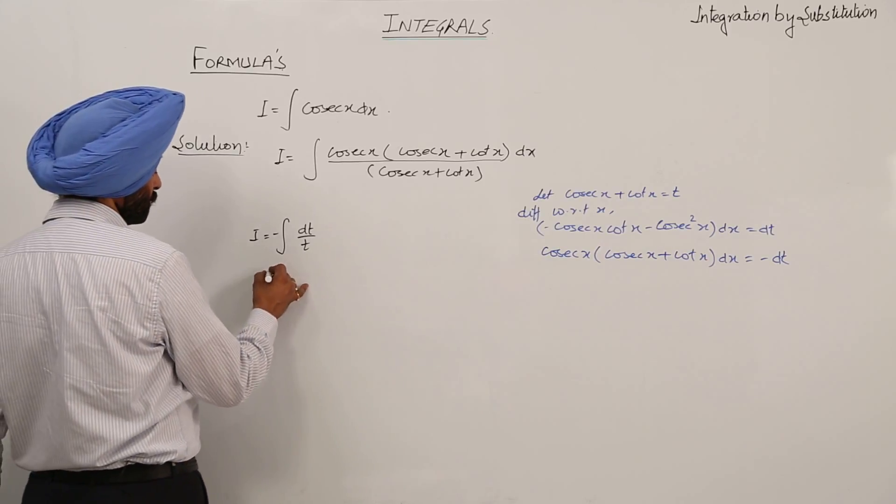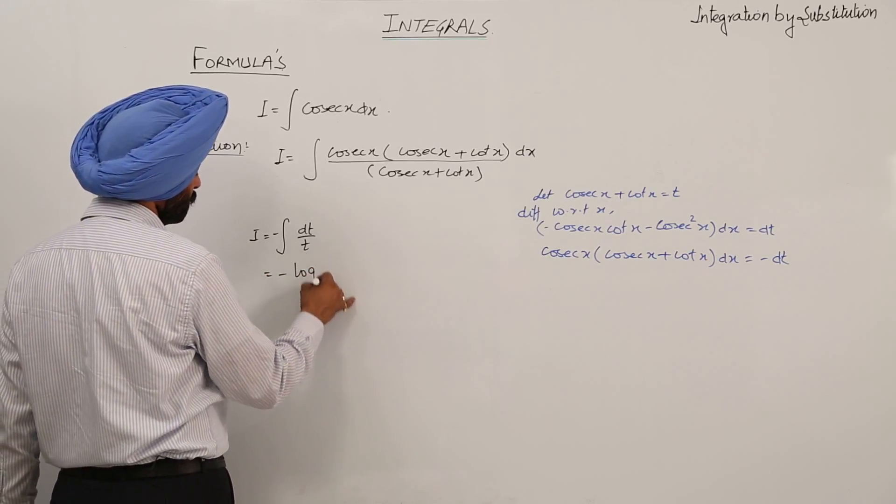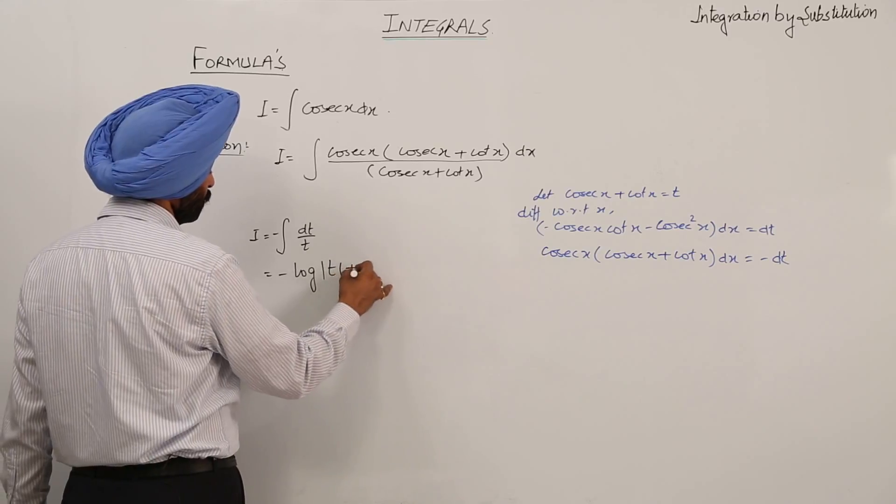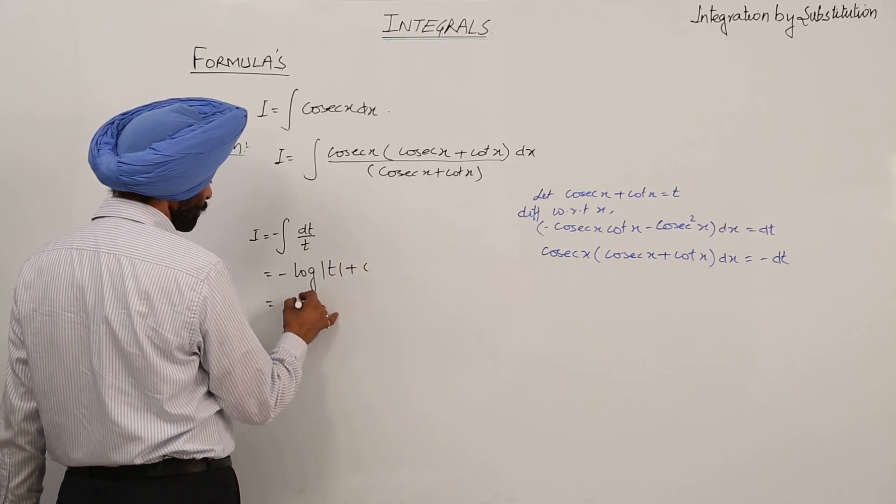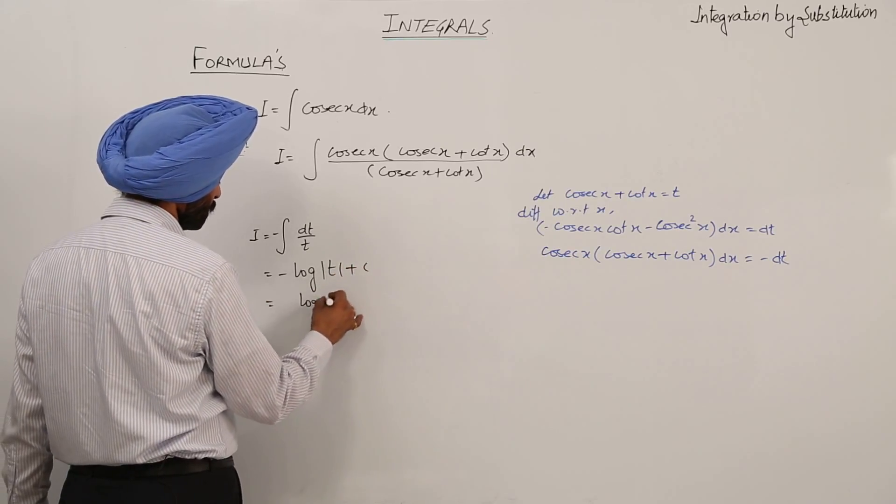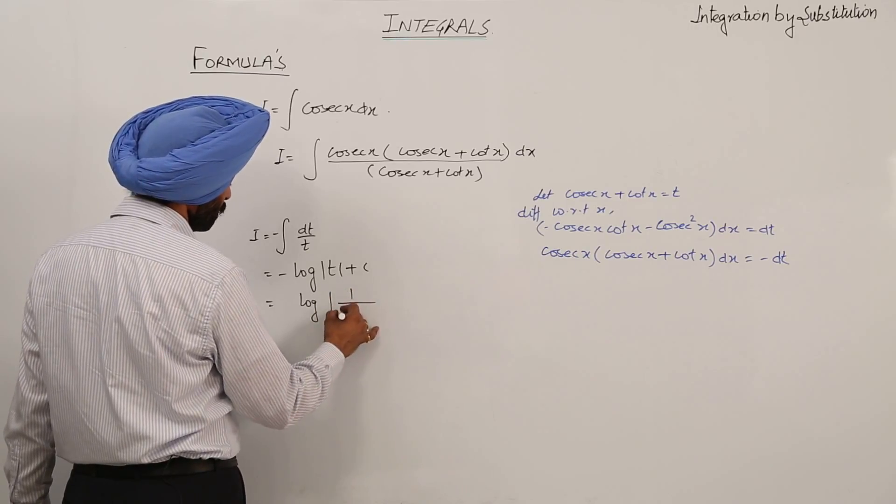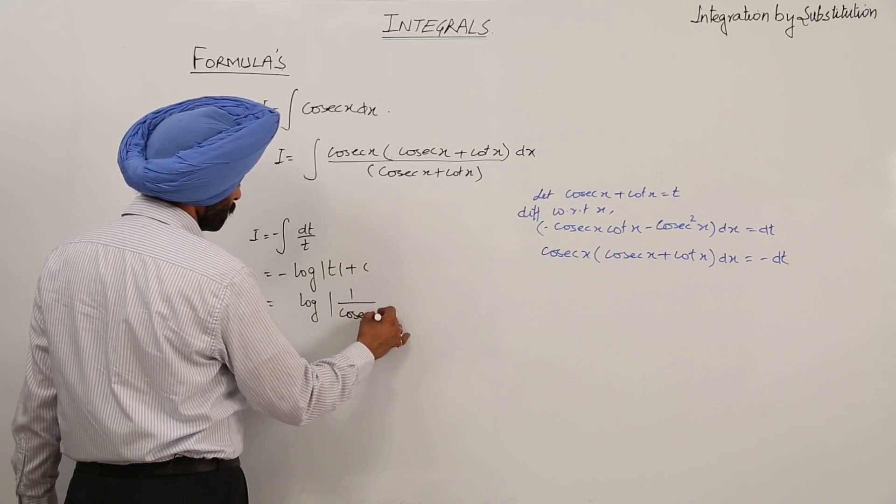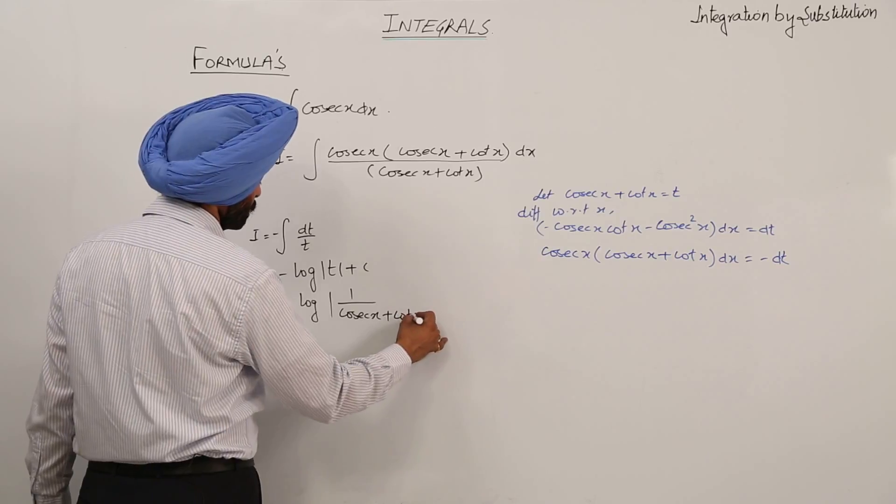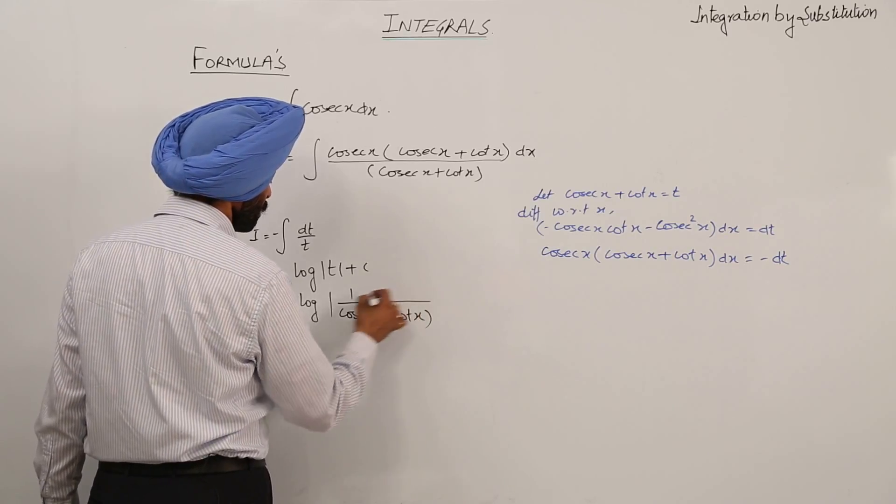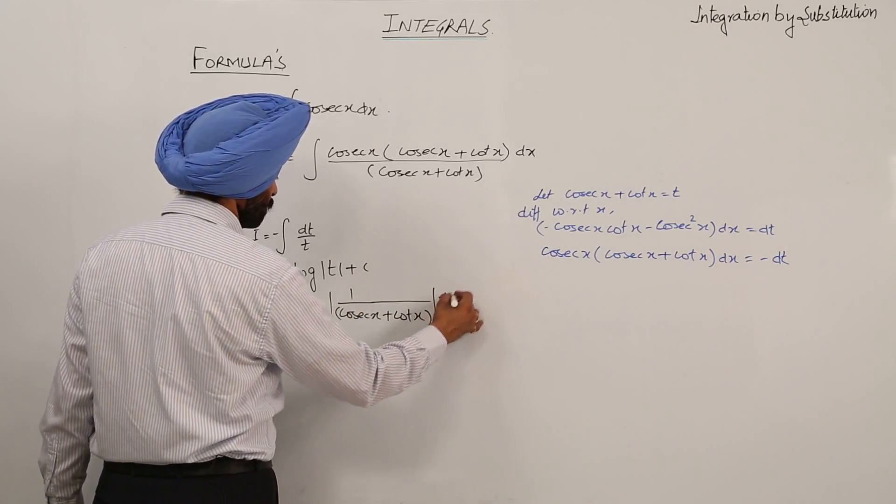Now what we are having? This becomes minus log mod t plus c. Or this can be written as log 1 upon cosecant x plus cot x plus c.